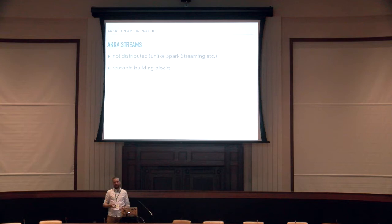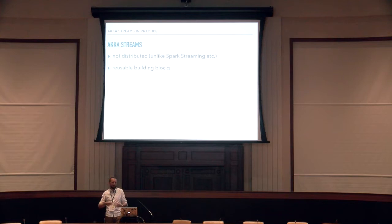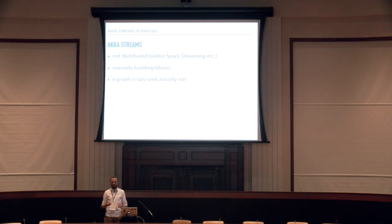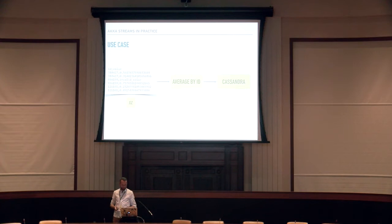When defining a stream processing pipeline in Akka Streams, you define reusable building blocks — code for the pieces that will process your data. It's important that all the blocks are lazy: when you define the blocks, nothing is actually processed. You need to be explicit about running the entire graph. The building blocks are a recipe for processing the data, and then you explicitly specify the materializer, which will be used to actually run the data processing.